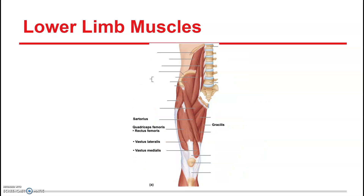Now down to the lower limb muscles. My favorite muscle is the sartorius. Sartorius comes from the Latin for tailor, which is sartorial. It's named such because it allows you to cross your legs — think of pictures of old-fashioned tailors who would have their sewing on their lap with their legs crossed, ankle to opposite knee. That's what this muscle does: it externally rotates and flexes the thigh.